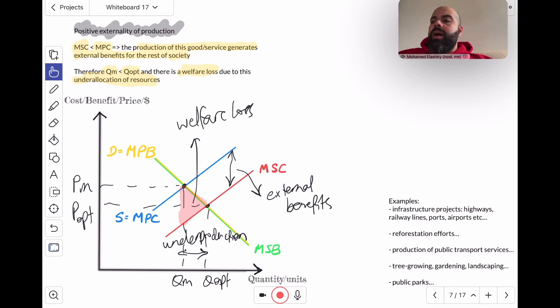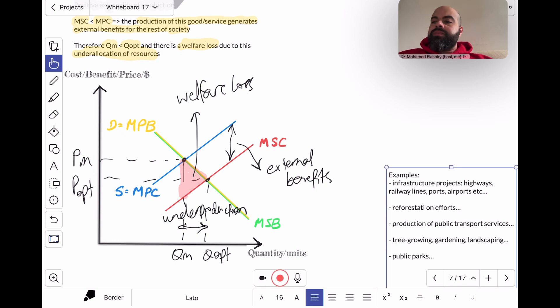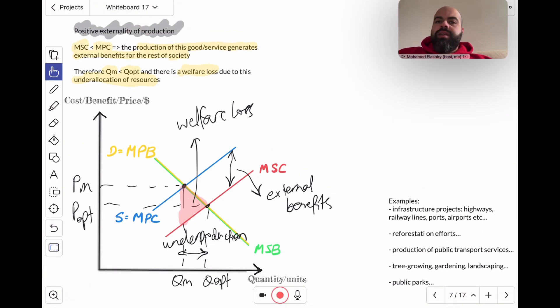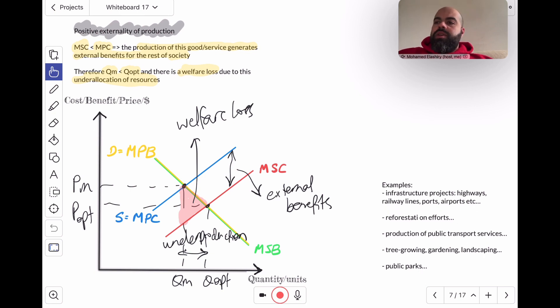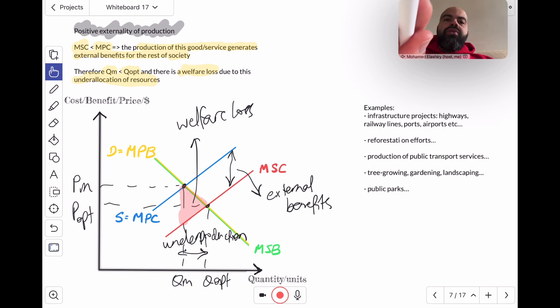Now what are some examples of products that have positive externalities of production? So all infrastructure projects, like highways, railway lines, ports, airports, they generate external benefits for the rest of society because they help interconnect society more, which boosts trade and creates jobs and so on.